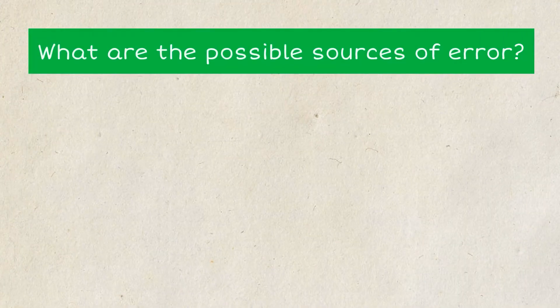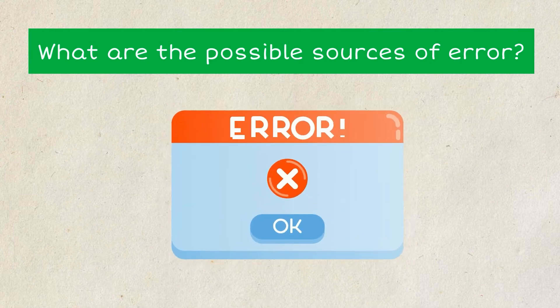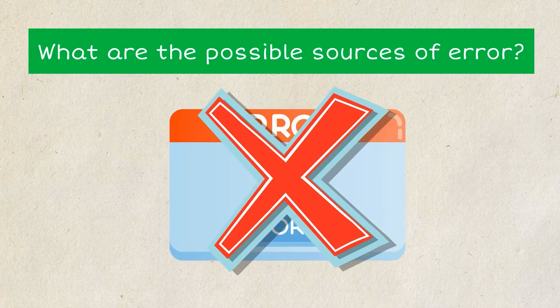And third, what are the possible sources of error? In connection with the previous one, you can discuss here the errors in your experiment and the things that could be improved to avoid the errors.